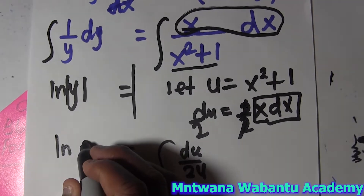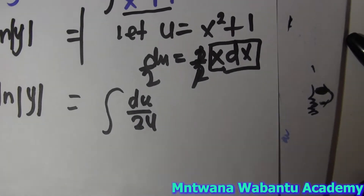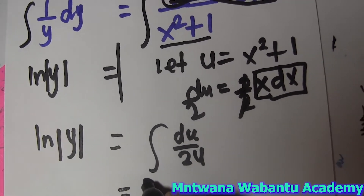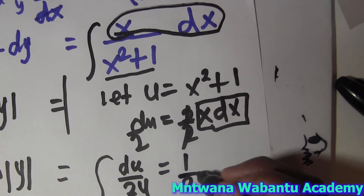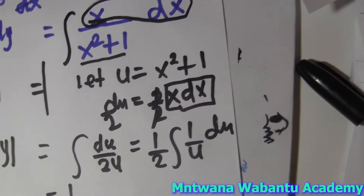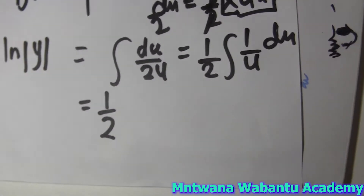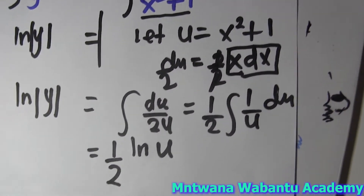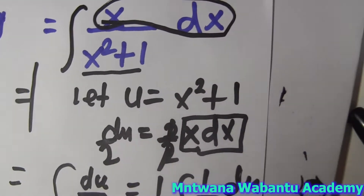So on the left-hand side we have ln|y|. On the right we have the integral of (du/2)/u. I can take 1/2 out front, so it becomes (1/2) times the integral of (1/u) du. Now what is the integral of 1/u du? That's ln(u). So we have (1/2) ln(u), and substituting back, u = x² + 1.